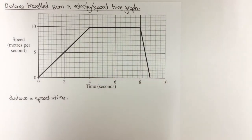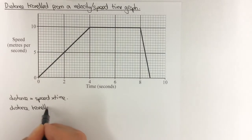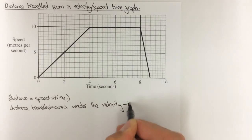So instead we have to use the idea of the area under the curve or the line to find the distance travelled. The distance travelled is given by the area under the velocity or speed time graph.